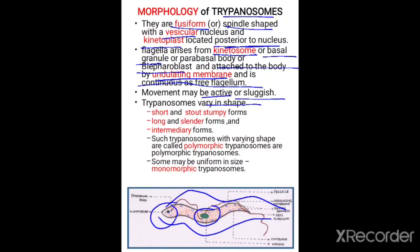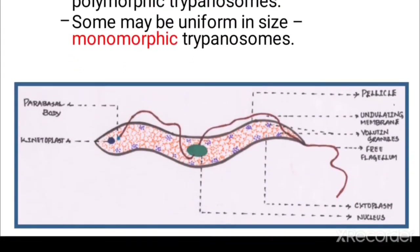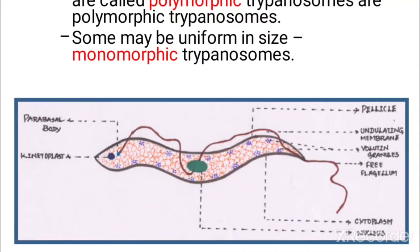The flagella attaches to the body by an undulating membrane, which is continuous as a free flagellum. The movement of Trypanosoma may be active or sluggish. Trypanosomes vary in shape — they may be short and stout stumpy form, or long and slender form, and sometimes an intermediary form. Such Trypanosomes with varying shape and size are called polymorphic Trypanosomes, while those uniform in size are called monomorphic Trypanosomes. In this image, we can observe the spindle-shaped body with the vesicular nucleus at the center, kinetoplast posterior to the nucleus, and the parabasal body from which the flagella arises, attaching to the body by the undulating membrane.